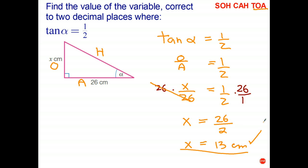In summary, if we know a trig ratio, which we do here, we can use that to find the length of an unknown side.